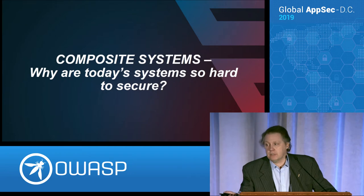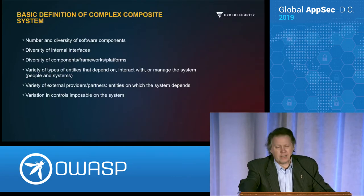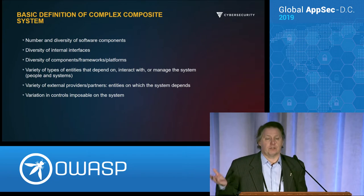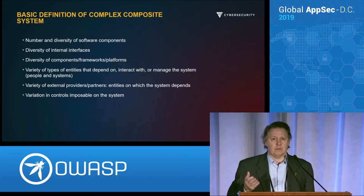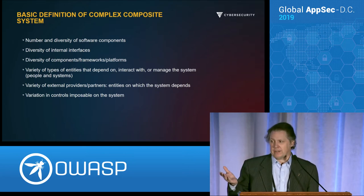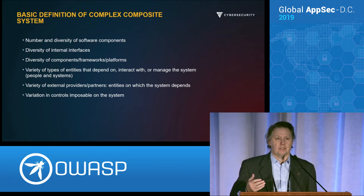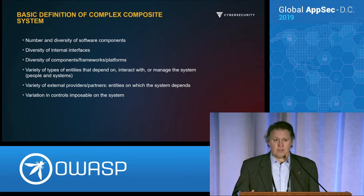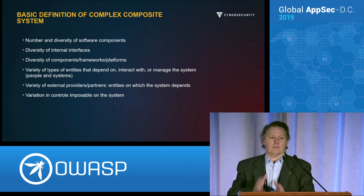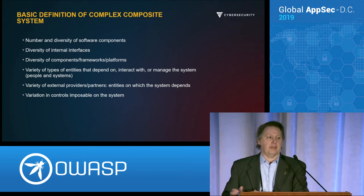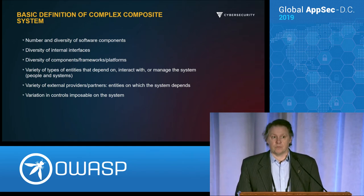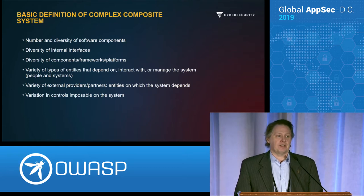So, composite systems: why are today's systems hard to secure? There are a whole bunch of reasons. The number and diversity of software components is just through the roof. Long gone are the days when you write your entire big complicated system in one language, on one platform, using one toolkit. I talk to students when I go recruiting, and their class projects are like that — but projects out in the real world, certainly the ones I'm familiar with within government, are not like that anymore.